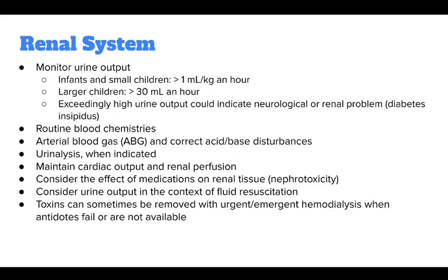For the renal system, monitor urine output — greater than 1 mL per kg per hour for infants and small children, and greater than 30 mL per hour for larger children. Exceedingly high urine output could indicate neurological or renal problems such as diabetes insipidus. Obtain routine blood chemistries and an arterial blood gas, and correct acid-base disturbances. Perform urinalysis when indicated, maintain cardiac output and renal perfusion, and consider the effect of medications on renal tissue. Consider urine output in the context of fluid resuscitation, and note that toxins can sometimes be removed with urgent hemodialysis when antidotes fail or are unavailable.